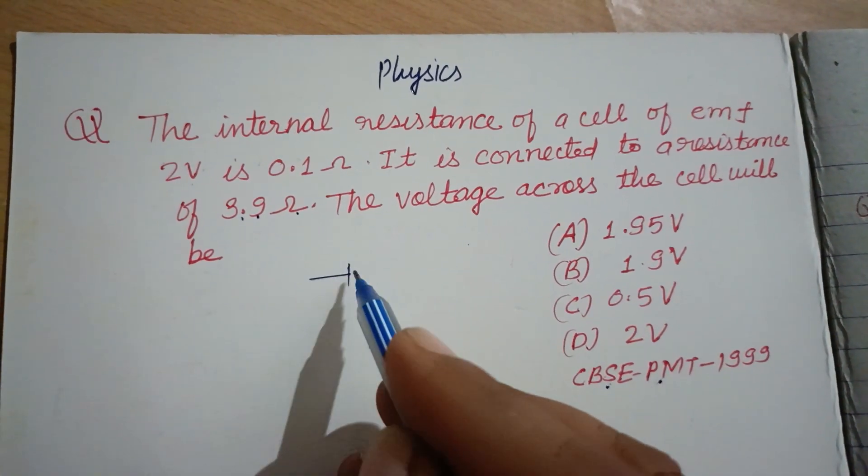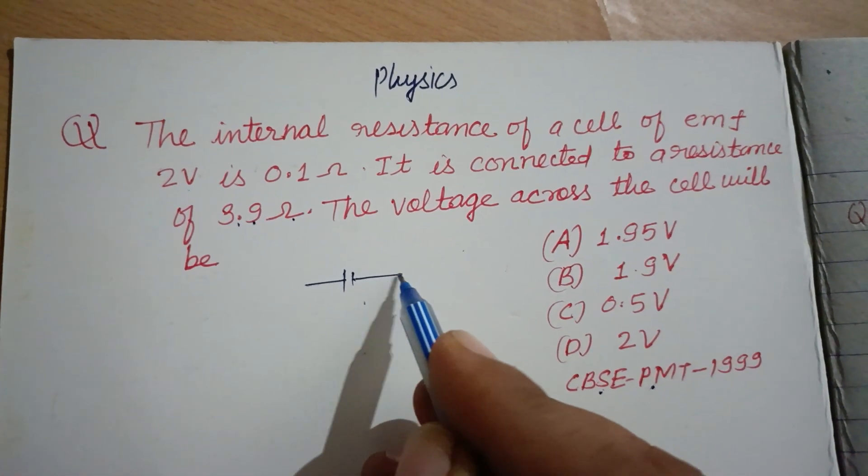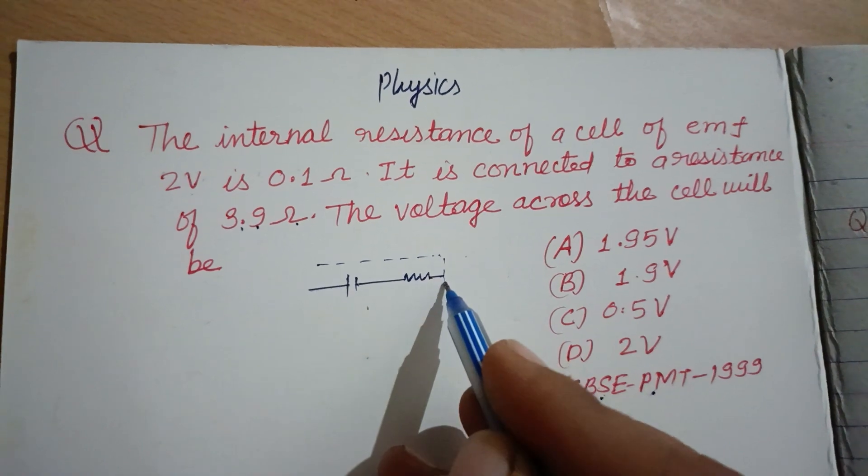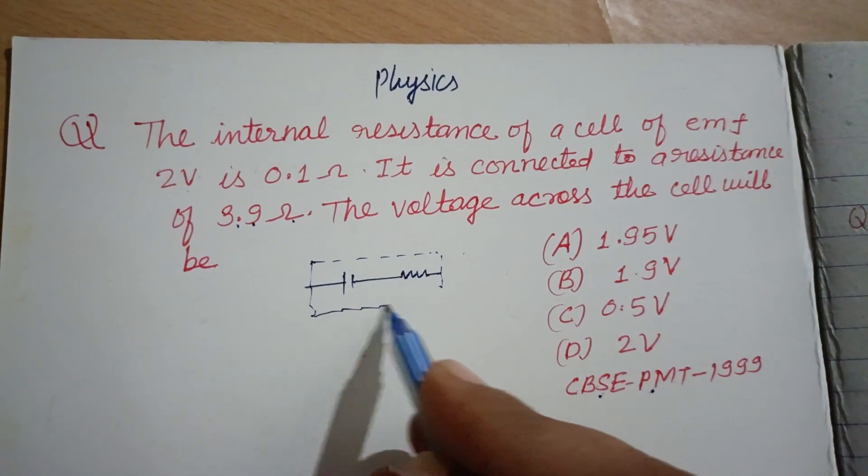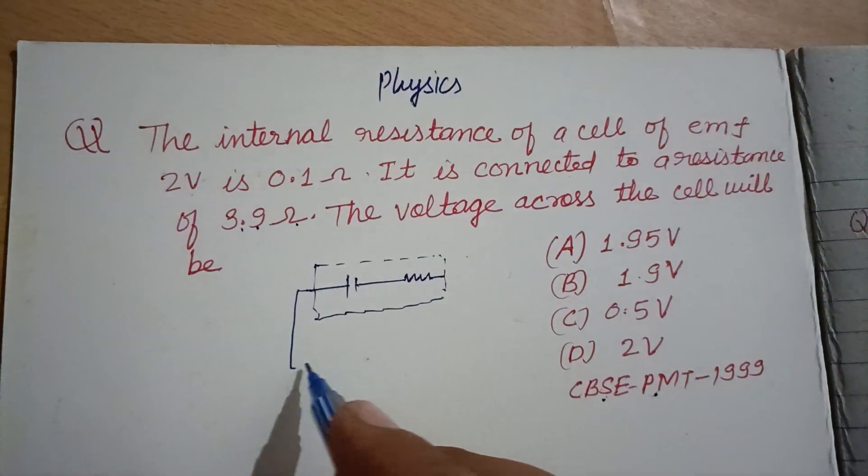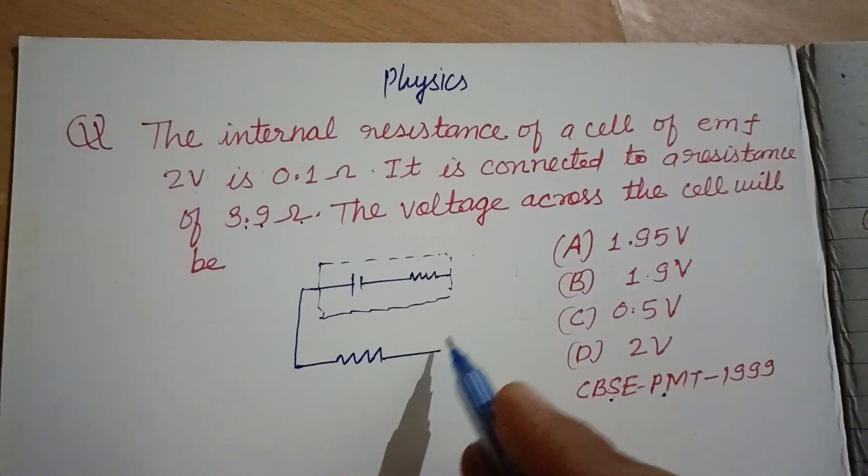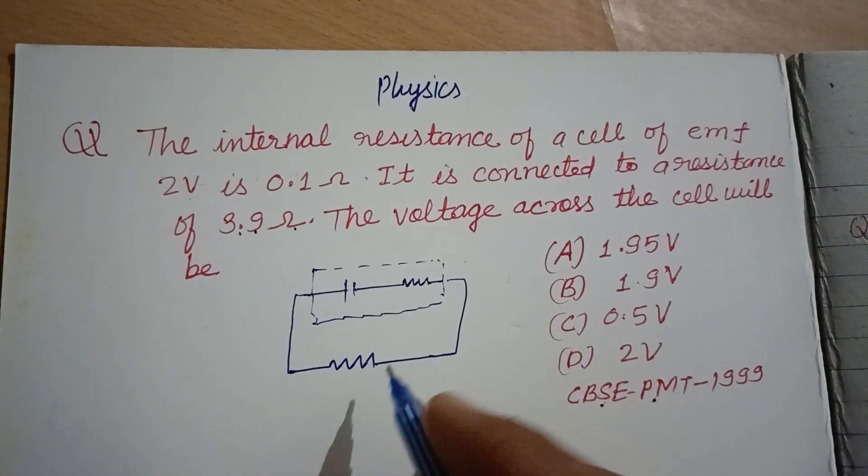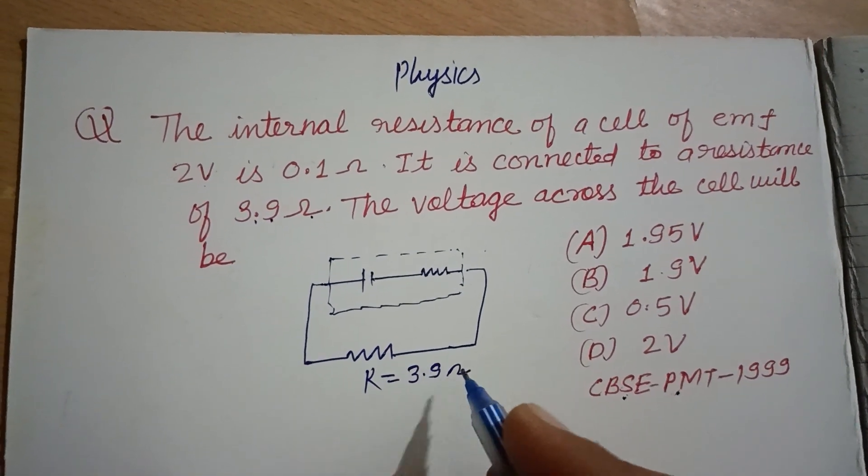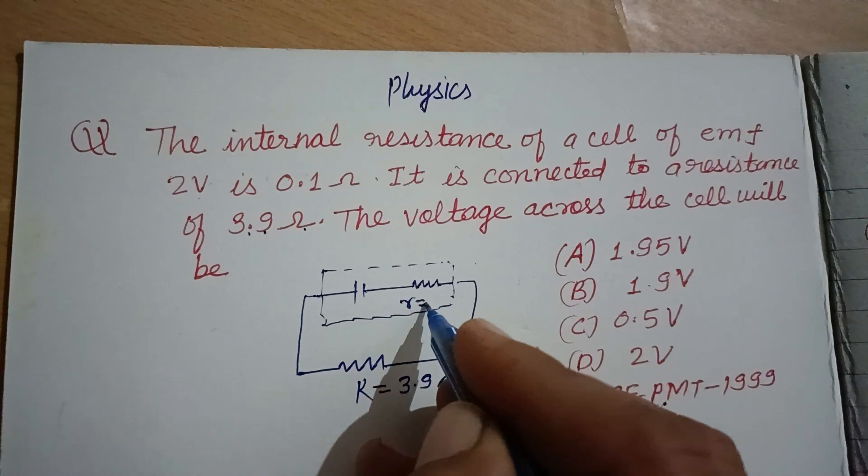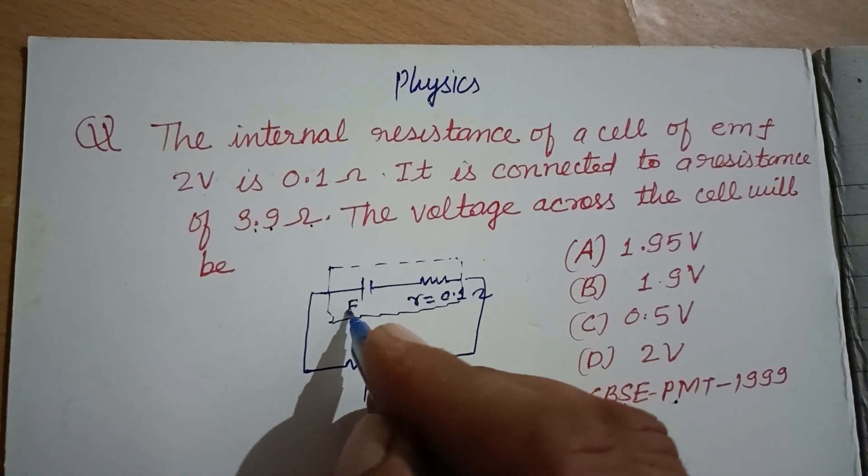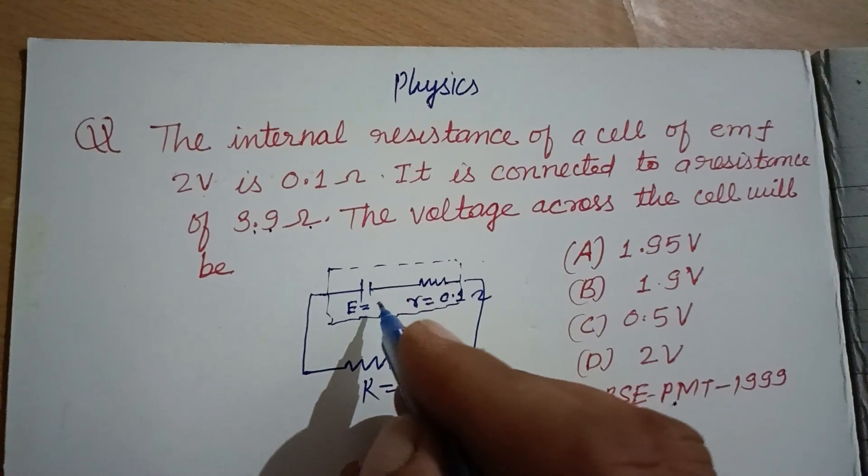So here is the cell. Its internal resistance is given. And it is connected to a resistance R which is given as 3.9 ohm. And this internal resistance is 0.1 ohm. And EMF of the cell is 2 volt.